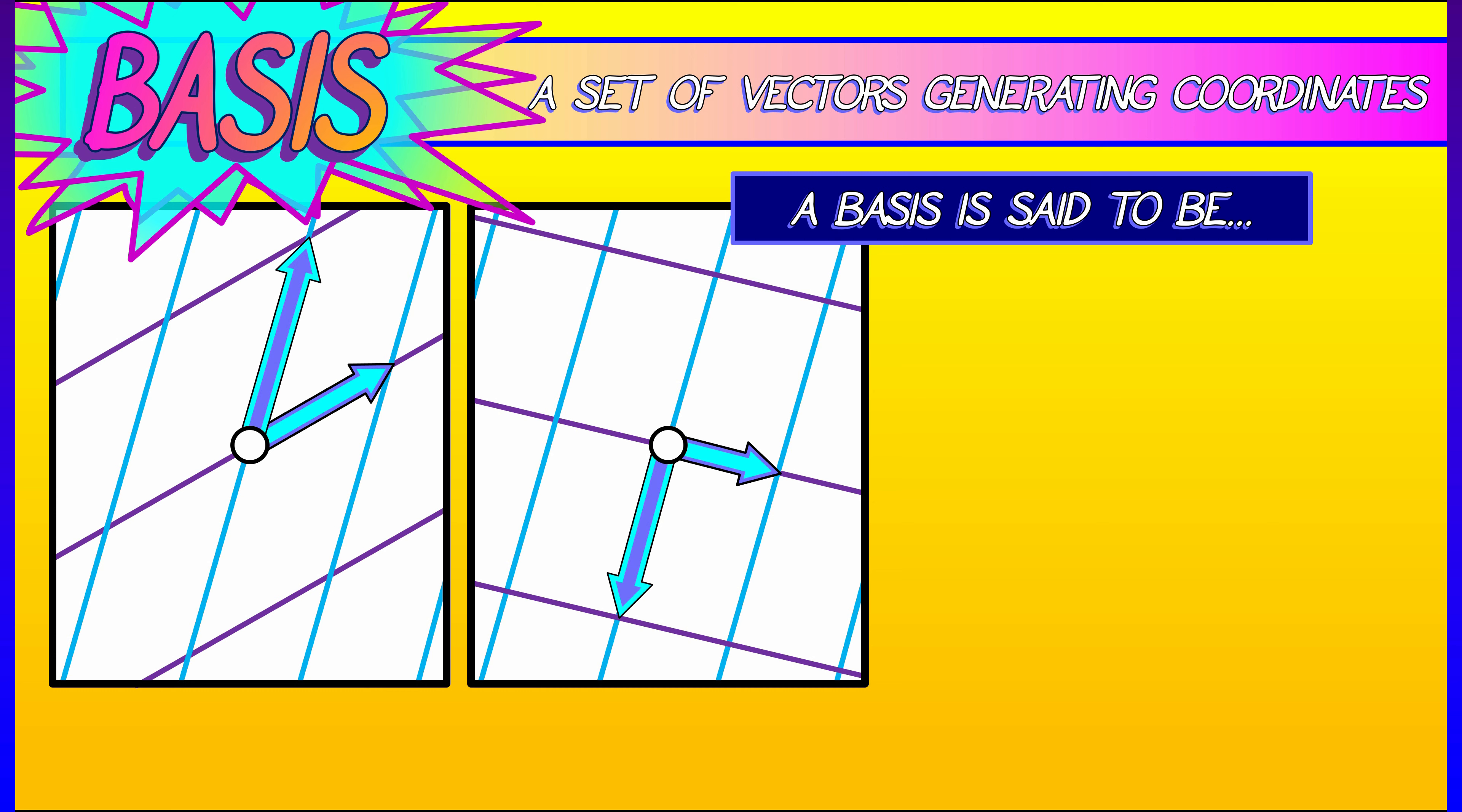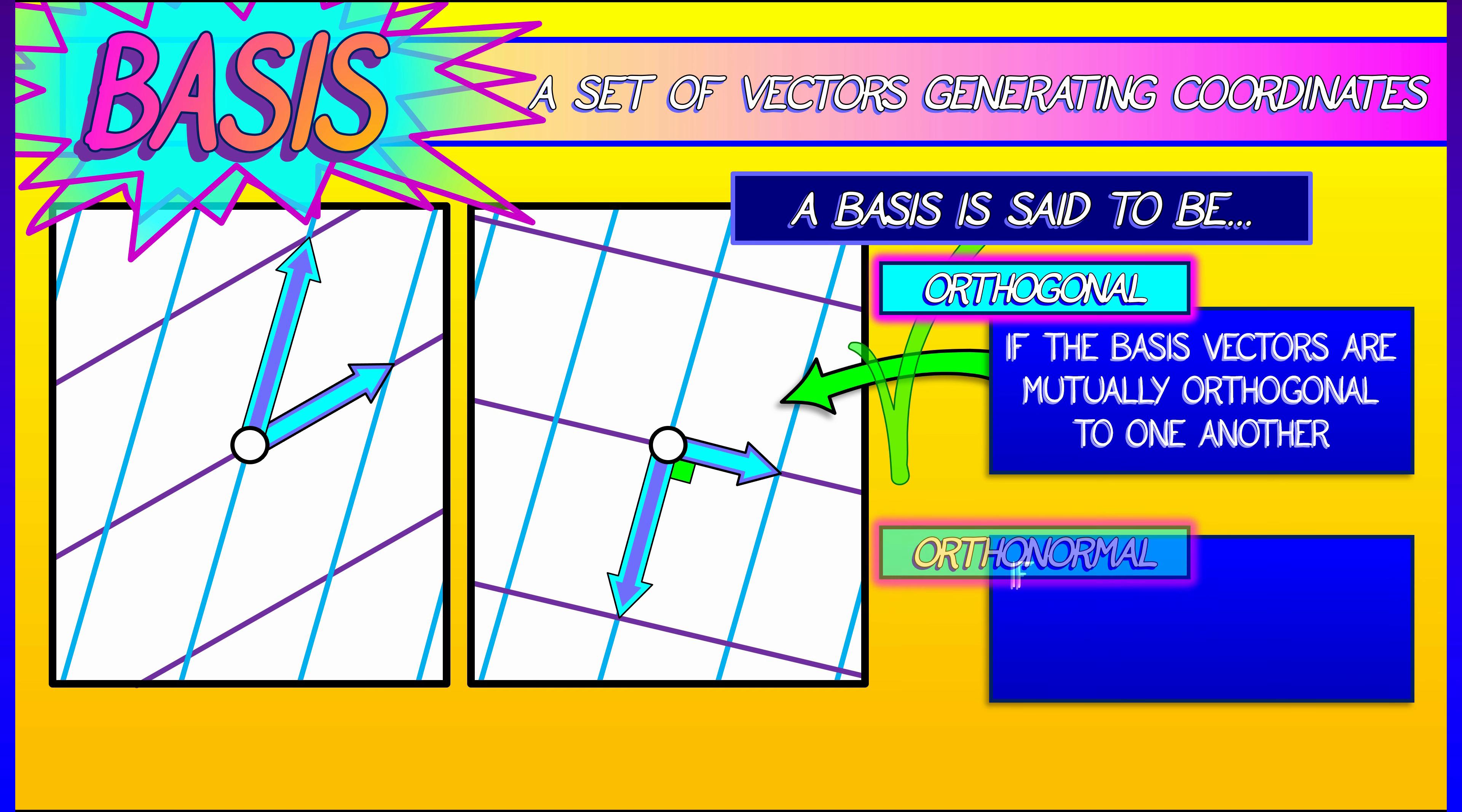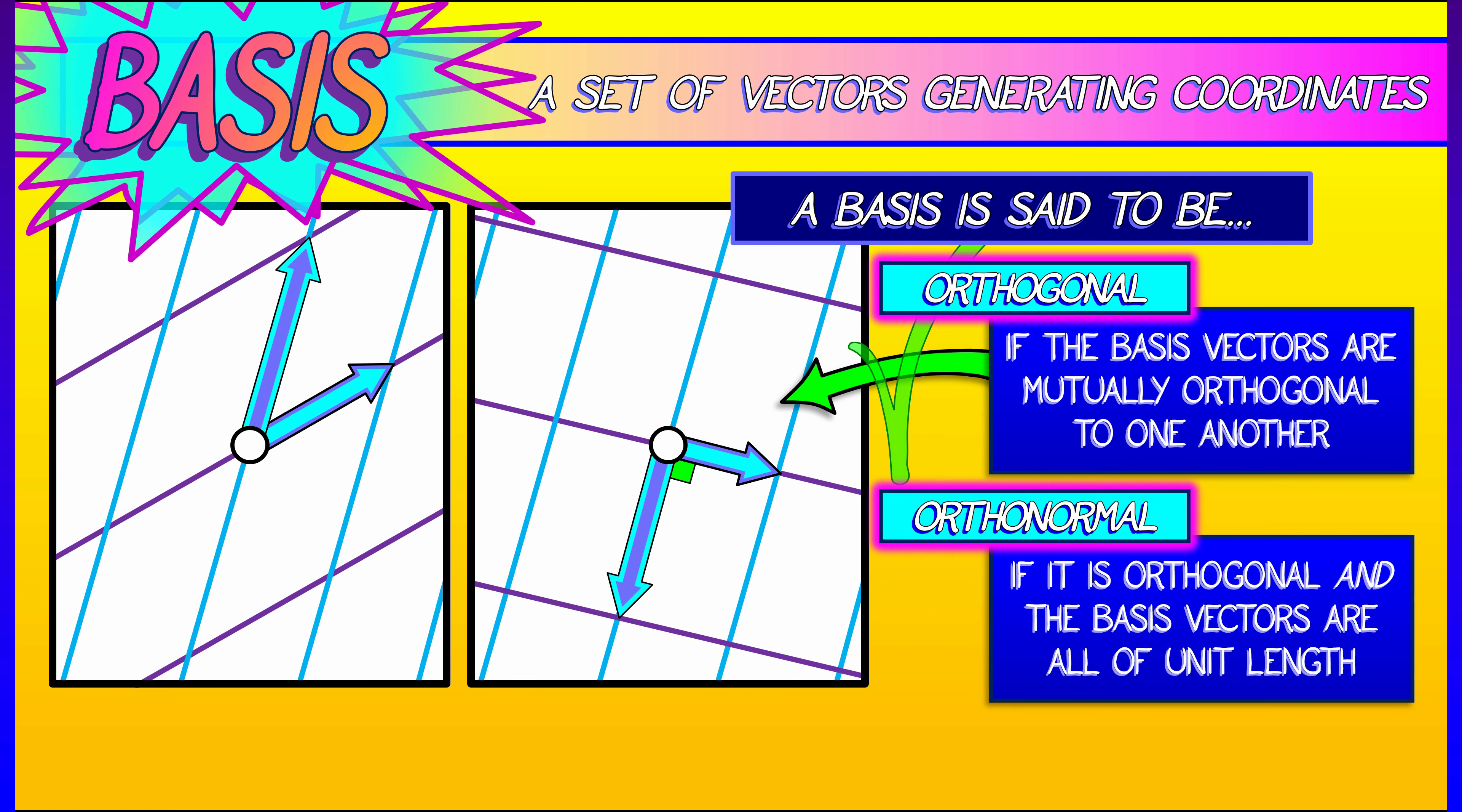In general, a basis is said to be orthogonal if all the basis vectors are mutually orthogonal to one another. That is, you're generating this system, this grid, where all the streets are at right angles. And the example that you see on the right is orthogonal, the one on the left is not. In addition, if you have an orthogonal basis and all those basis vectors are of unit length, then your basis is said to be orthonormal.